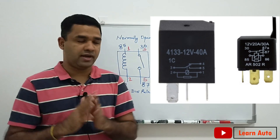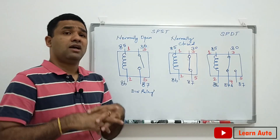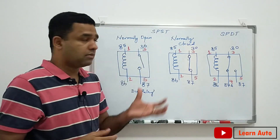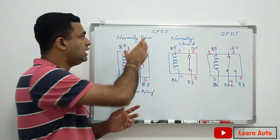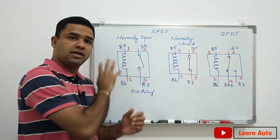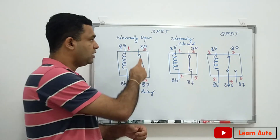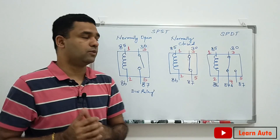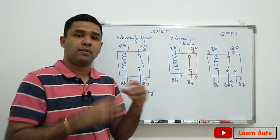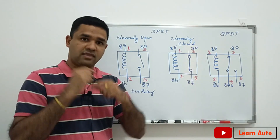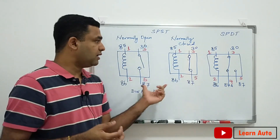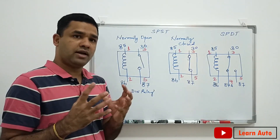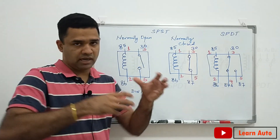In other construction functions, there is normally open relay and normally closed relay. When it is normally closed, the contact is closed. If you have a 5-pin relay, the pin numbers are 5 pins; a 4-pin relay has 4 pins.